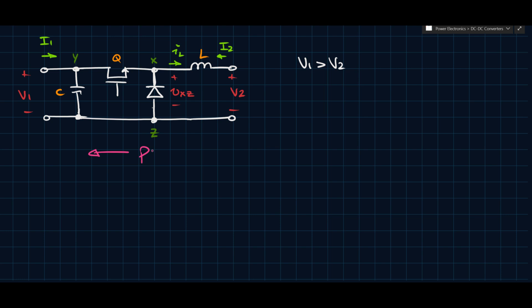Generally speaking, it's usually easier to think about reversing currents than reversing voltages. So we're going to imagine that we're reversing the terminal currents. Instead of I1 going towards the right, I1 will go towards the left. And I2, which was originally going towards the right, will also go towards the left. But it's not enough to just reverse the terminal currents — if we're going to reverse the terminal currents, we also have to reverse the switch currents.